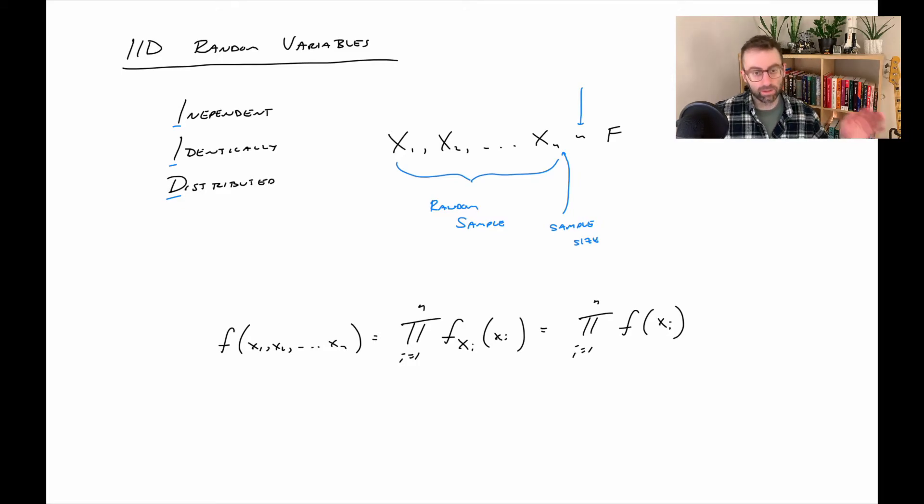Oftentimes when we use that distributed symbol with a bunch of random variables on the left hand side, it's often implied that that means they're IID. And then this F would be the distribution, and again, that's the marginal distribution for each of the individual random variables.